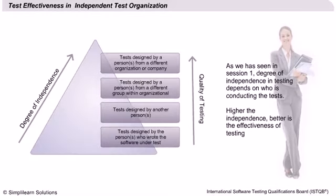The effectiveness of finding defects by independent testers is much higher as compared to developers doing the testing themselves. The level of independence will be very low when tests are designed by the same person who also wrote the code. Developers who wrote the code will tend to test only for positive scenarios and limit their tests to that particular requirement or specification only. Also, they would presume things which they might have included while developing the code, and if these presumptions are wrong, the same defects built into the code will also be built into the tests.